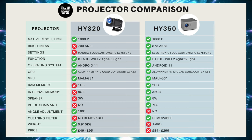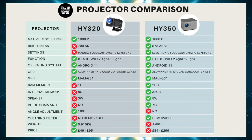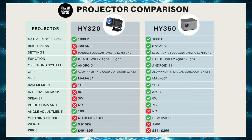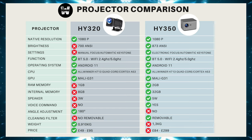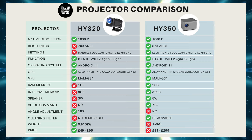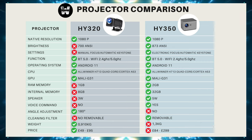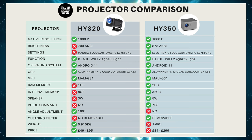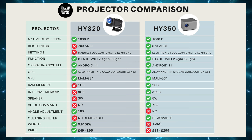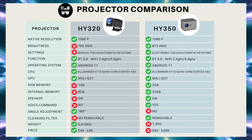If price isn't a problem for you and you intend to use it in a fixed location, the HY350 is the best purchase if you don't need that mobility aspect. It's more for staying in one place with a more controlled environment. The HY320, on the other hand, you can put anywhere.